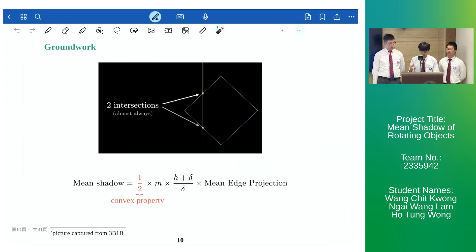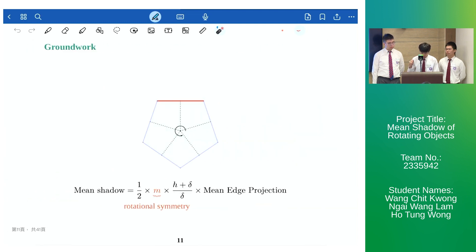To find the mean shadow we first make use of the convex property. That is, every straight line passing through a convex object intersects the edge of the object exactly twice, hence the factor 1 over 2 appears in our formula. Next by rotational symmetry all edges of the regular polygon are identical, therefore we can consider the m edges separately and hence the factor m appears in our formula.